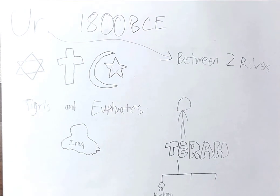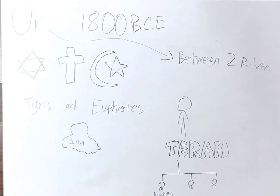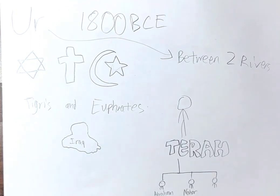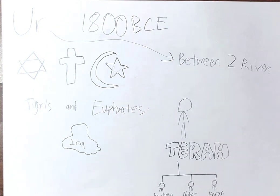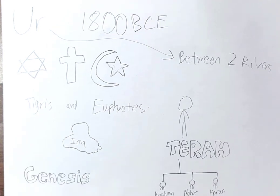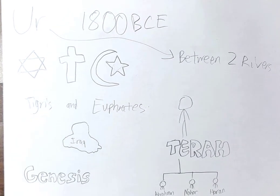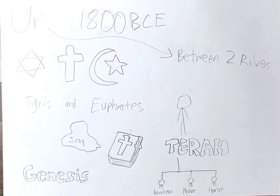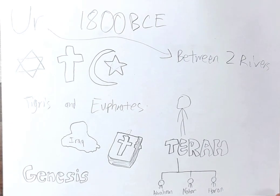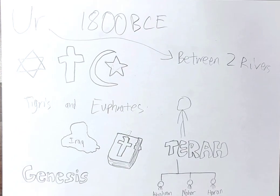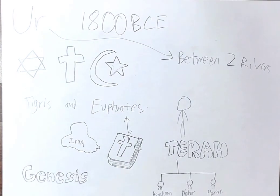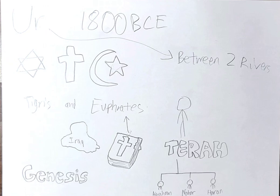Abraham wasn't alone - he had two brothers, both called Nahor and Haran. In the Bible we find their story in a place called Genesis. It tells us that they were shepherds, pasturing sheep in the lush meadows of the Euphrates valley.